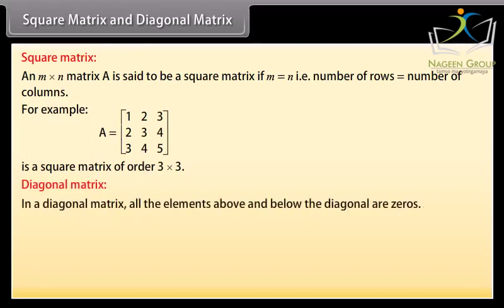Diagonal matrix: In a diagonal matrix, all the elements above and below the diagonal are zeros. For example, B is a diagonal matrix.